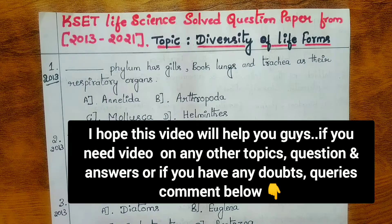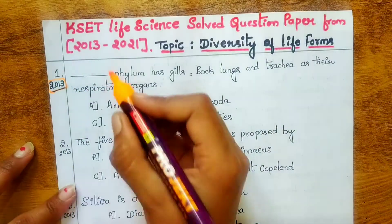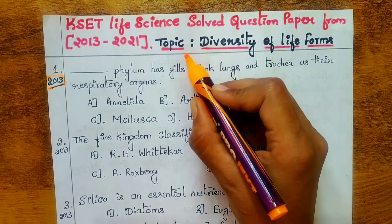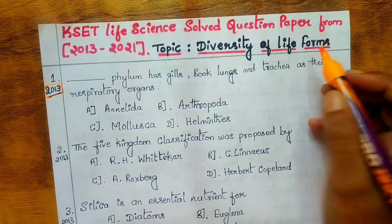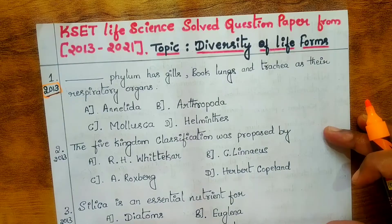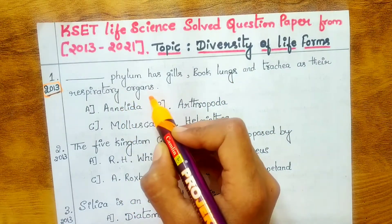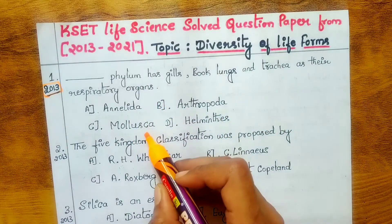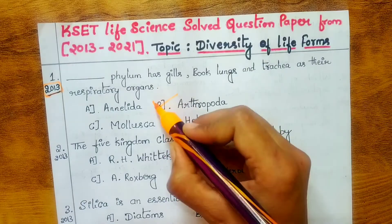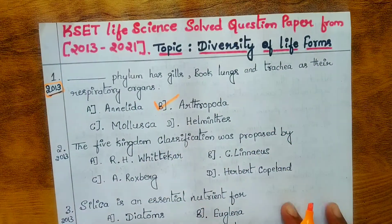Let's start from question one, which is from 2013. The question is: which phylum has gills, book-lungs, and tracheae as their respiratory organs? The options are: Annelida, Arthropoda, Mollusca, and Helminths. The answer is B — Arthropoda. The phylum Arthropoda has gills, book-lungs, and tracheae as their respiratory organs.